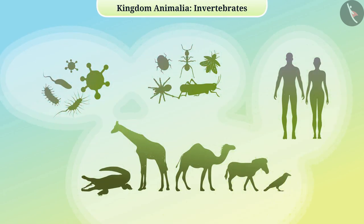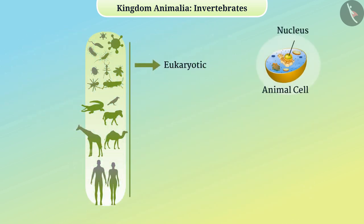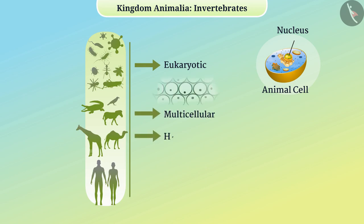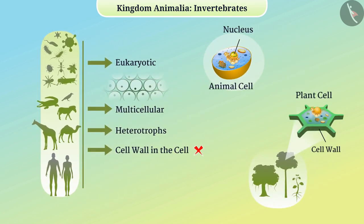Many animals are seen all around us. Classification of these is necessary for studying them. Virtually all animals are eukaryotic, multicellular and heterotrophs. Their body is definitely made of cells, but the cells of their body do not have cell wall like cells of the plant body. Most animals are movable — they can move from one place to another.